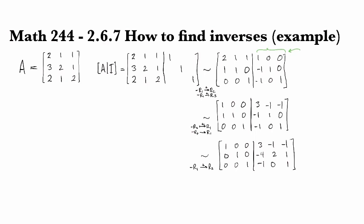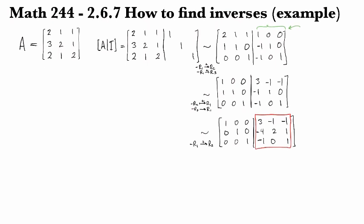And so then I just look at what I have over here in this part, and this is going to be my inverse. So the inverse of A is 3 minus 1 minus 1, minus 4 2 1, minus 1 0 1, and that's my answer.